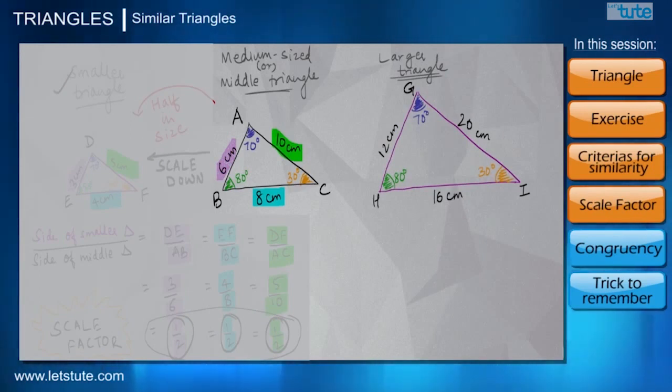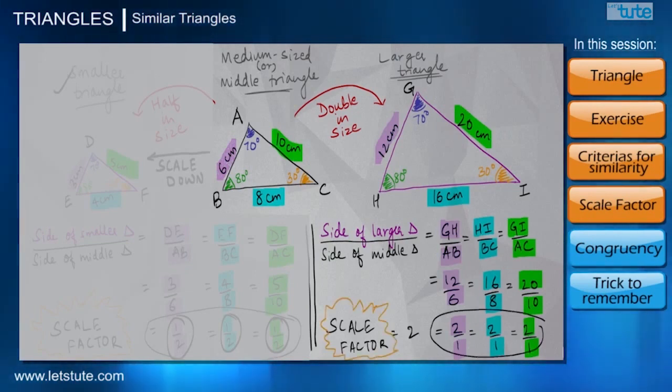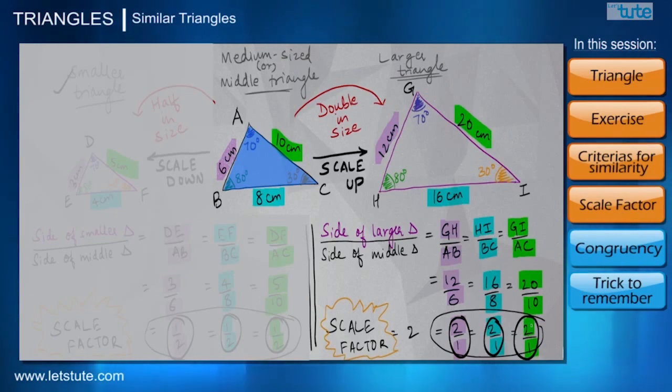Now if we shift our attention to the larger triangle GHI, quite clearly all of its sides are double in length with respect to the sides of triangle ABC. So what is happening over here is that there is a scale factor of 2 that is involved because all of its sides are double in length. So we can definitely say we are performing a scale up on triangle ABC by a scale factor of 2 upon 1, or 2, to get a larger triangle GHI.